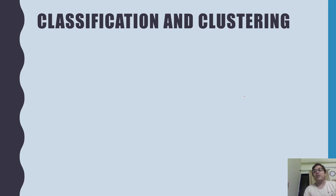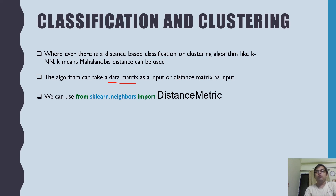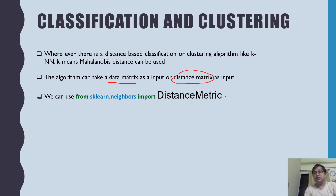Now let's see how Mahalanobis distance can be used in classification and clustering. There are many distance-based algorithms like KNN and K-means where it can be applied. These algorithms can take either a feature matrix or a pre-computed distance matrix as input. Using scikit-learn, you can use SK-learn neighbors with a pre-computed distance matrix. The pairwise distances module supports several metrics, including Mahalanobis distance, so you can compute the distance matrix from your input matrix.